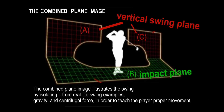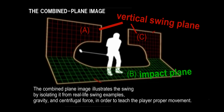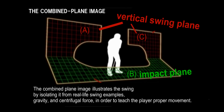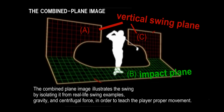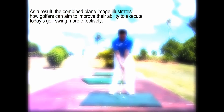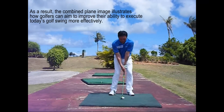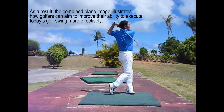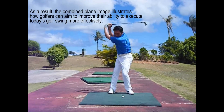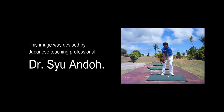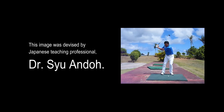The combined plane image illustrates the swing by isolating it from real-life swing examples, gravity, and centrifugal force in order to teach the player proper movement. As a result, the combined plane image illustrates how golfers can aim to improve their ability to execute today's golf swing more effectively. This image was devised by Japanese teaching professional Dr. Shu Han.